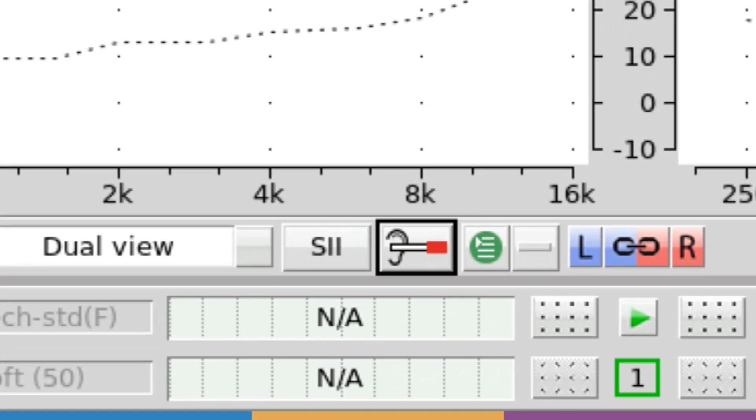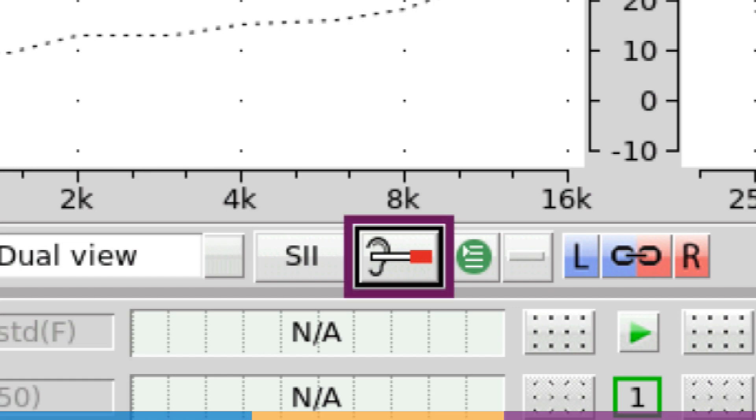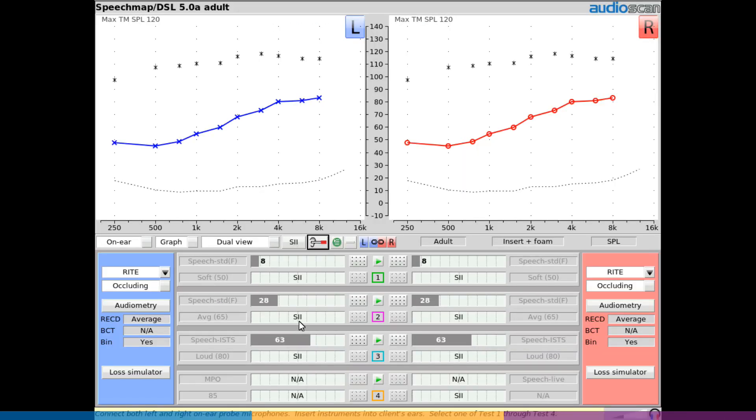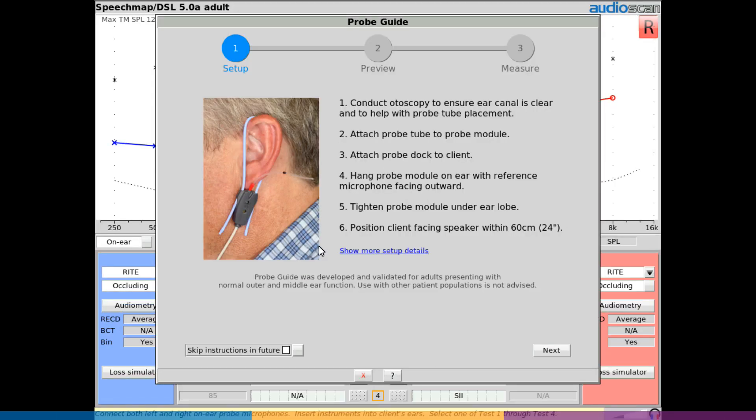ProbeGuide can be opened by selecting the probe guide button from within any test screen which includes on-ear measurements. Upon launching the tool, the Setup tab provides guidance on preparing the client and the equipment for real ear measurement.